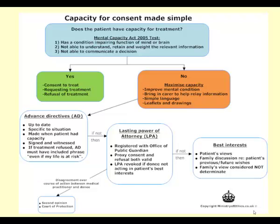Capacity and consent made simple: under the Mental Capacity Act, has a person got a condition that's impairing their mind or brain? Are they not able to understand or retain and weigh the information? Are they not able to communicate? If the answer is no to all these, then they have capacity. If you answer yes to any of these, whether it's consent to treatment or refusal of treatment, they don't have capacity, and there are different elements that can be utilized: advanced directives or lasting power of attorney.